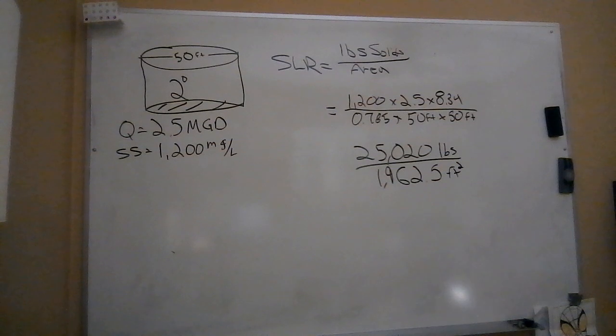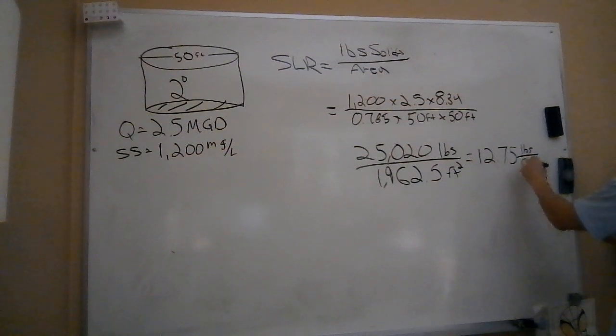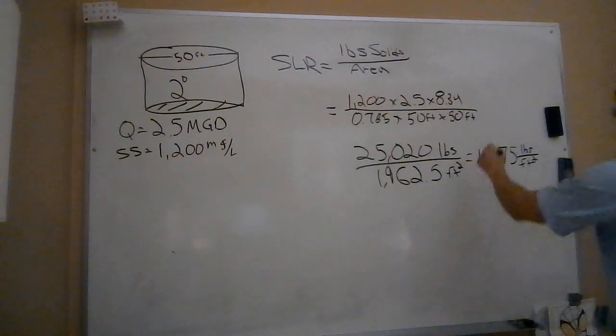1962.5, and this is going to be square feet - an area. Feet times feet gives me square feet. Now I'm just going to divide those two out: 25,020 divided by 1962.5, and that's going to get me to 12.75 pounds of solids per square foot of clarifier. That is my solids loading rate.